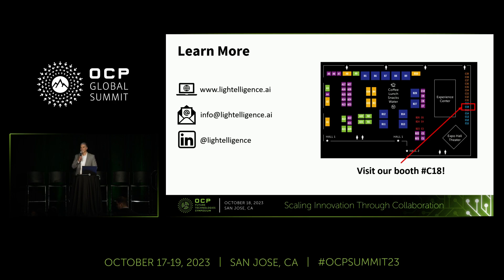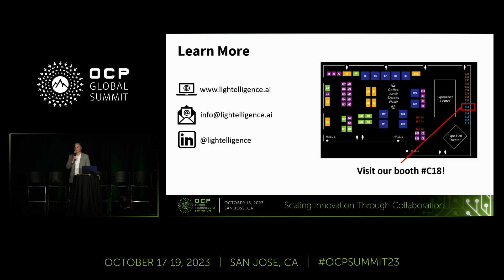Q: In your demo you show point-to-point. You mentioned in the next generation you might do some switching — can you elaborate? Level one, level two? A: Exactly. We do have plans to do memory pooling. We didn't have a CXL switch at the time, so we just did memory expansion. But it's absolutely in our plans to acquire CXL switches and memory appliances to further showcase what we have.